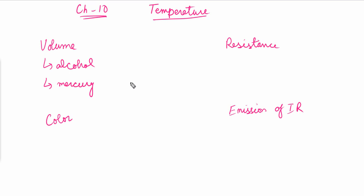Now let's discuss resistance. We have a certain type of resistor called a thermistor. A thermistor is a heat-sensitive resistor. If we increase the temperature, the resistance of the thermistor decreases. So the effect of temperature on a thermistor is that its resistance decreases — that is the physical property that changes with the change in temperature.